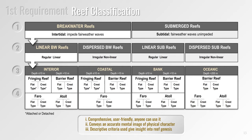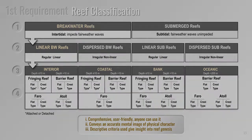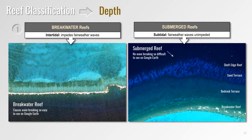The first step distinguishes two reef classes based on their depth. Breakwater reefs develop at the water's surface causing waves to break over them and are therefore intertidal by definition. Submerged reefs develop below the surface and are subtidal and don't cause wave breaking. We can see breakwater reefs on Google Earth and classify them, but submerged reefs aren't so obvious and need exceptional images to see them, so we won't look at this class further in this talk.